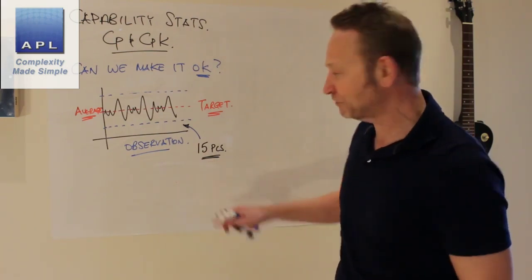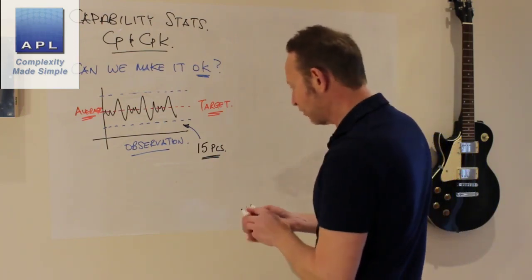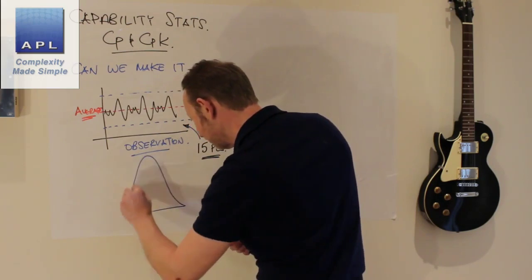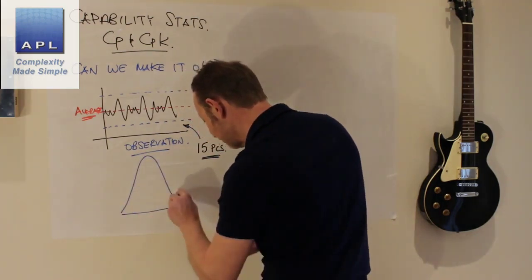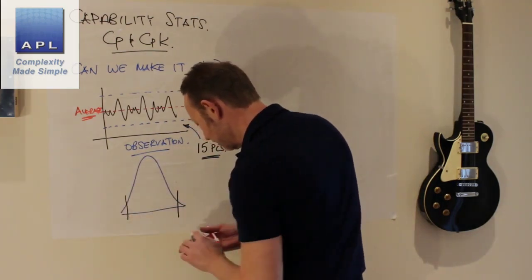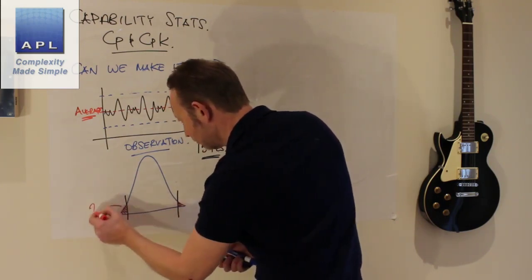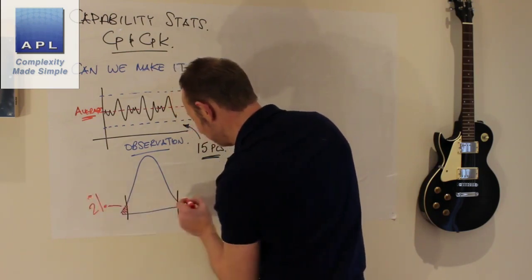Mistake number one is that you don't take enough data. But let's have a look at what's going on. Let's say the underlying distribution in the process looks like this. Put some tolerances on there, let's say you're going to get a small defect rate.